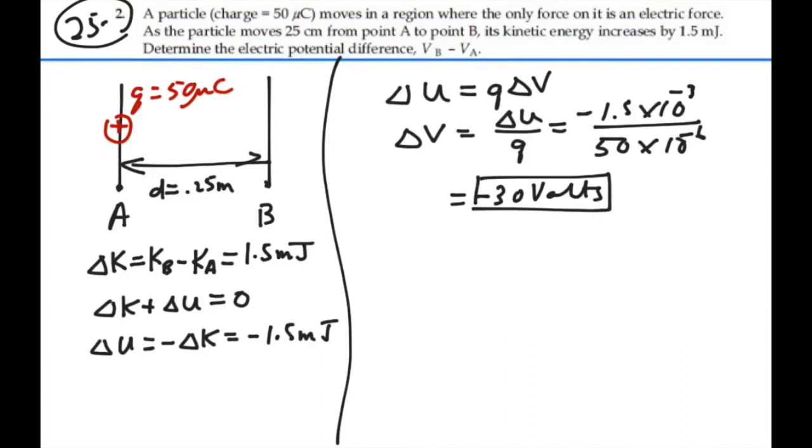That change in potential is our final minus our initial. So as we've defined it, this change in potential is our potential at B minus the potential at A. And that's equal to negative 30 volts. And that was the answer we're looking for.